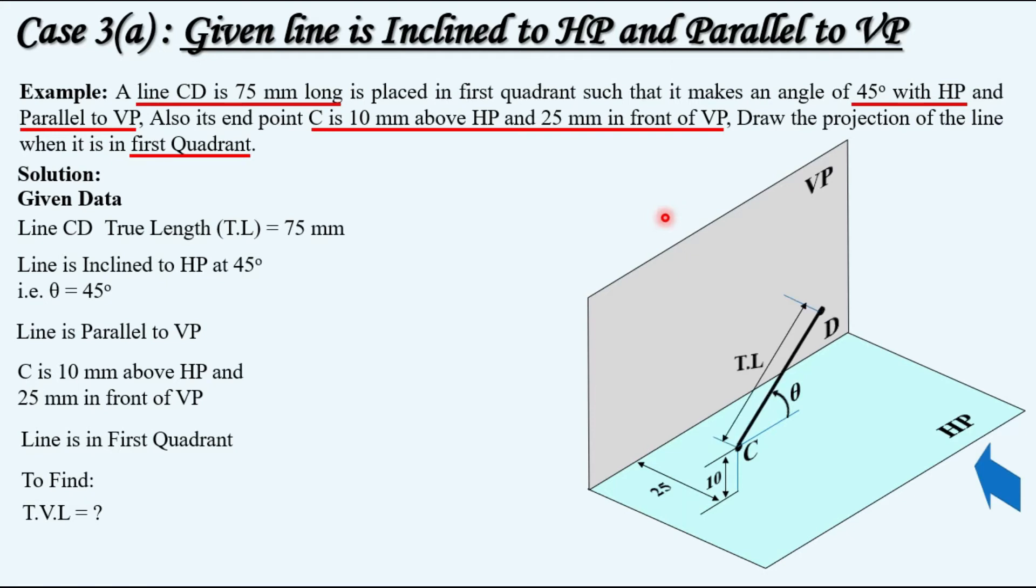If you are going to project it and obtain a front view on the vertical plane, you will get C dash and D dash as the corresponding front view points. And the line joining C dash D dash is the front view with the angle theta in front view.